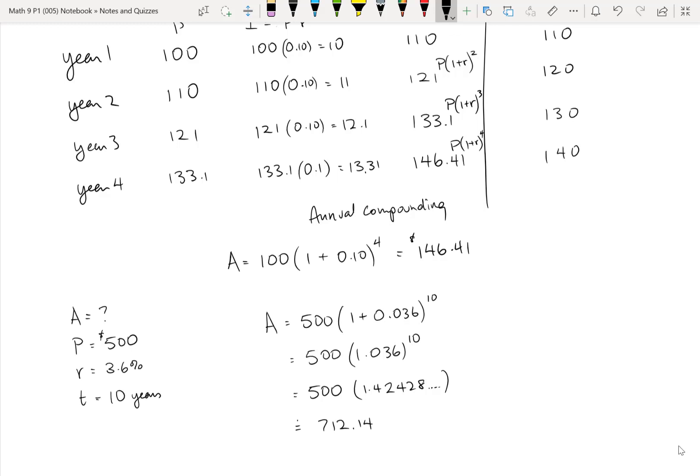It doesn't even have to be money. It could be anything that grows at a rate of 3.6 percent. So maybe there's a video on YouTube, and every year, 3.6 percent more people watch it. So right now, 500 people a year watch the video. In 10 years, assuming a growth rate of 3.6 percent per year, how many people are going to be watching it in 10 years? So it's really an identical calculation, and it can be used for lots and lots of things.